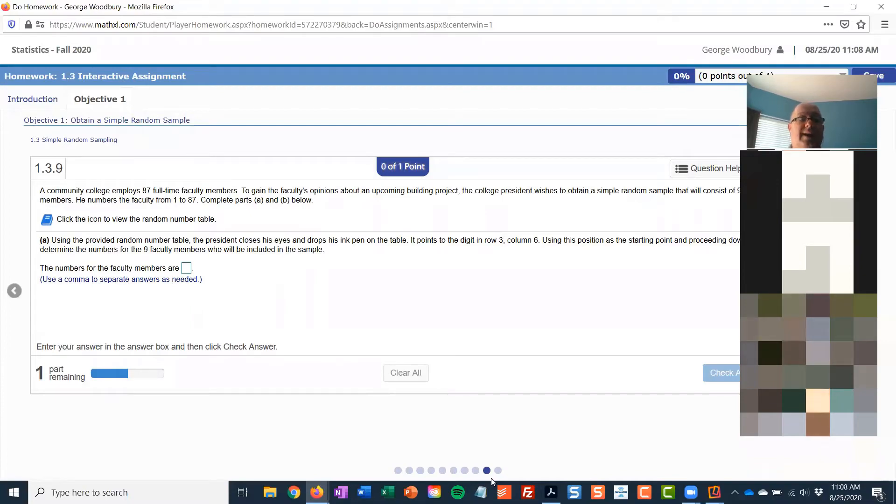It says a community college employs 87 full-time faculty members. To gain the faculty's opinions about an upcoming building project, the college president wishes to obtain a simple random sample that will consist of nine faculty members. So they number the faculty from one through 87, and we want to pick out nine faculty members.